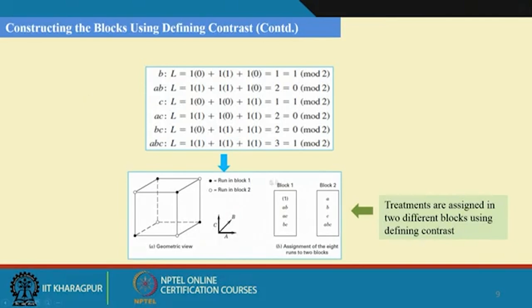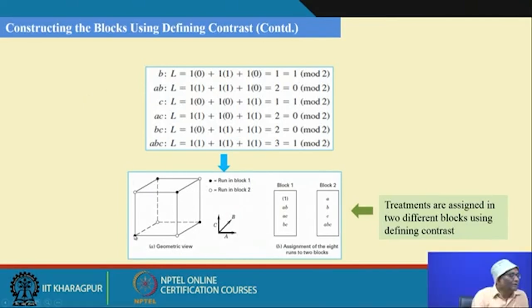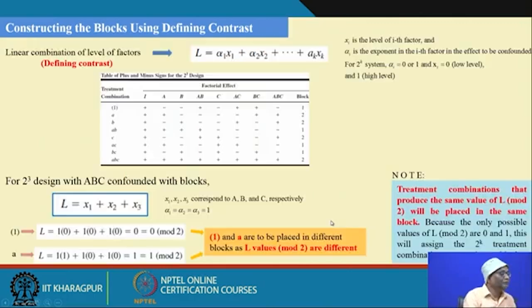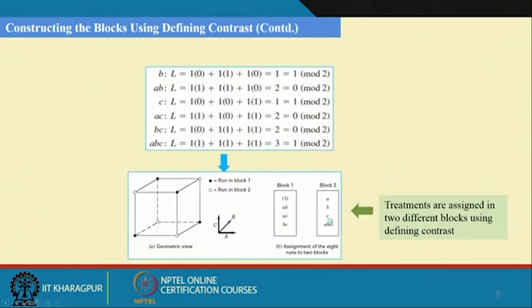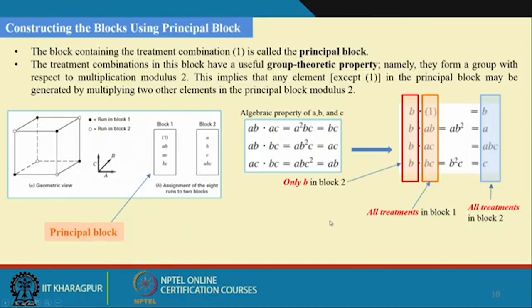That is what we have discussed so far. Geometrically, you can see that 1, ac, ab, and bc all run in block 1, and the others run in block 2.